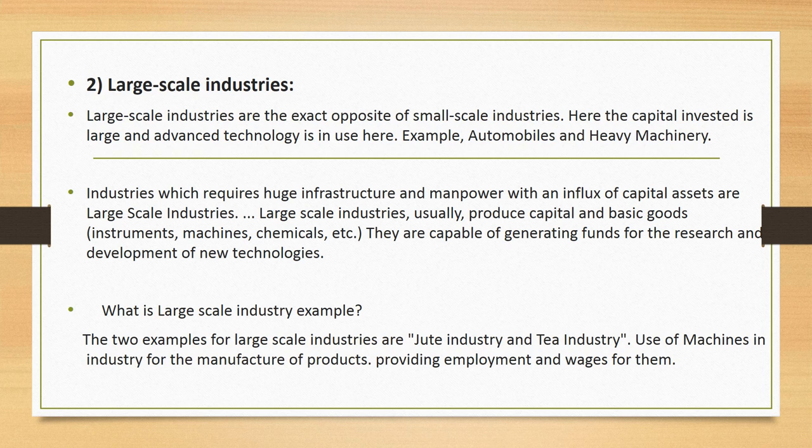The second type is large-scale industries, which are the exact opposite of small-scale industries. Here, the capital invested is large and advanced technology is in use. Examples include automobiles and heavy machinery. Industries which require huge infrastructure and manpower with a large influx of capital assets are large-scale industries. They usually produce capital and basic goods, and are capable of generating funds for research and development of new technologies. Two examples of large-scale industries are jute industries and textile industries. They use machines in the manufacture of products and provide employment and wages.